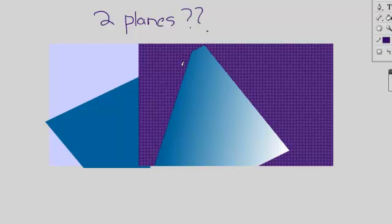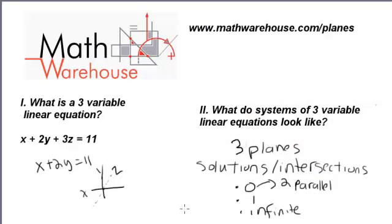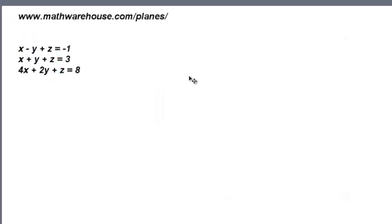Two planes is just not enough information. When we have two planes, you always end up with a line of intersection. Okay, that's it for the first of two videos on this. The next video we'll look at how can we use the elimination method to find actually where these three planes intersect. Go to mathwarehouse.com/planes if you'd like more information, resources, videos, and links to applets on this topic.